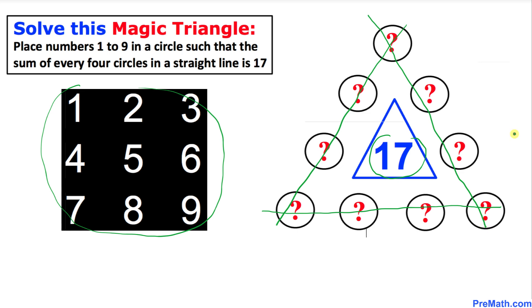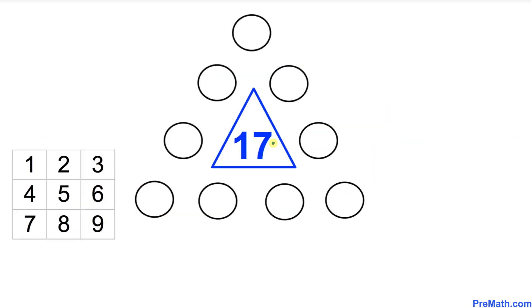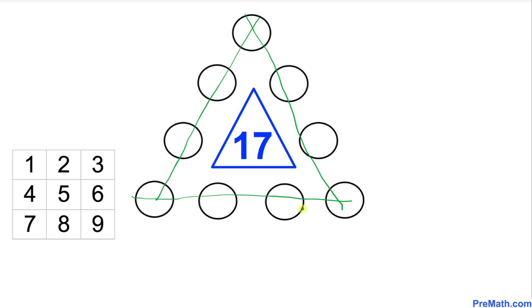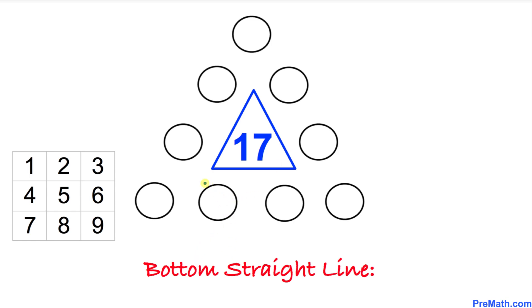We have nine empty circles and we need to fill out three lines: the bottom straight line, the left diagonal, and the right diagonal. We can start from any direction, so let's begin with the bottom straight line.